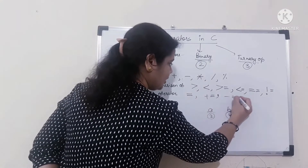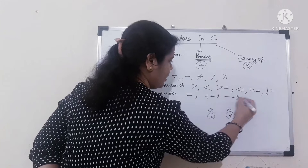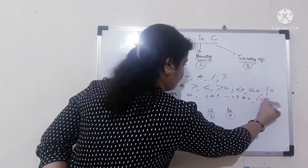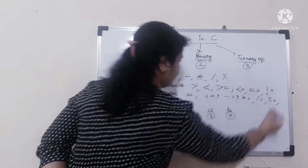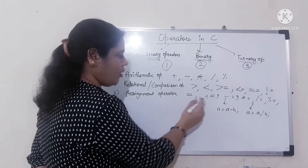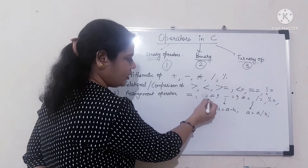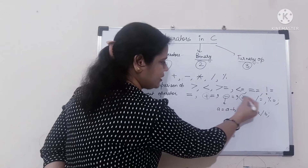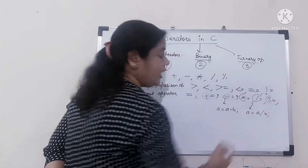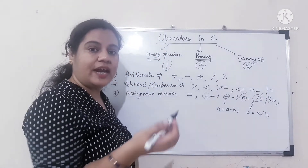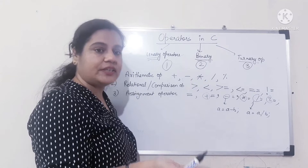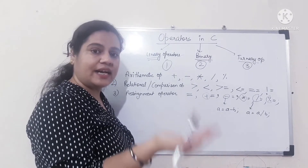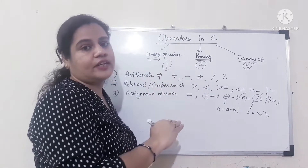Similarly, minus equal to, multiply equal to, divide equal to, and mod equal to. Whatever operation is on the left — plus, minus, multiply, divide, or mod — it will perform that operation, and then assign the result back into the left-side variable.